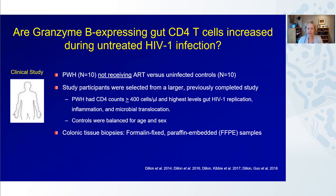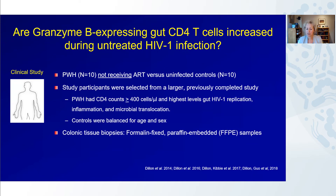We asked whether granzyme B-expressing gut CD4 T cells are increased during untreated HIV infection. To answer this question, we obtained samples from a previous clinical study — colonic tissue biopsies from 10 people with HIV infection not receiving antiretroviral therapy, and 10 uninfected controls. Study participants were selected from a larger cohort based on CD4 counts greater than 400, so that we had adequate cell numbers, and selected to have the highest levels of gut HIV replication, inflammation, and microbial translocation. Controls were balanced for age and sex.